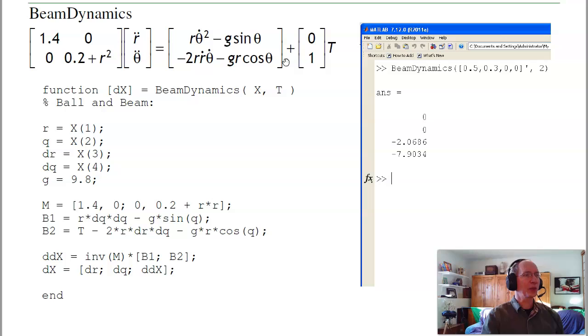The more important part is the beam dynamics. I pass a vector x, and this is the matrix language in MATLAB. I interpolate x to be position, angle, velocity, angular velocity, and gravity. From that, I can calculate the mass matrix—the first row, second row. Inverse of the mass matrix is the acceleration. Here's the derivative of x: derivative of r is dr, derivative of θ is dq, and the derivative of dr and dq is the acceleration.